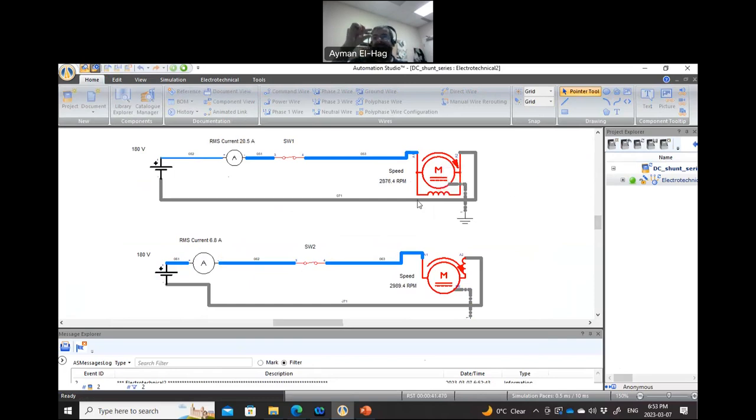There is a drop, but a slight drop in the speed. Now, let's go to the series motor and do exactly the same thing, make it 10, and see how much the speed will be affected. See here, it drops from around 3,000 to around 1,680. So it's a huge drop in the speed of the motor.